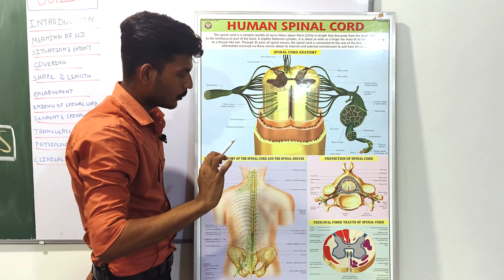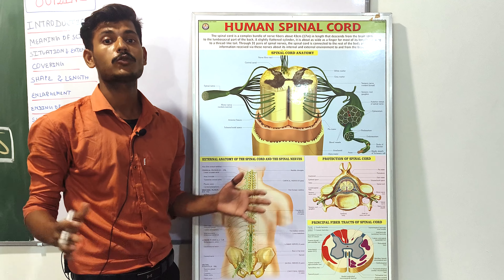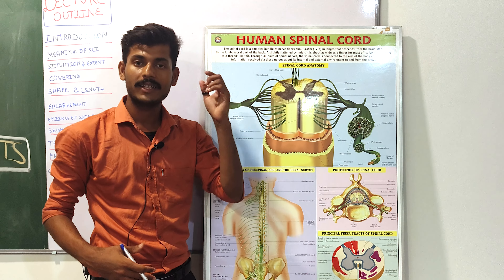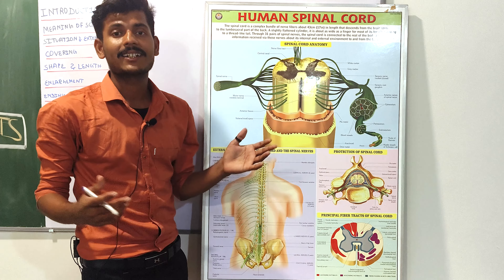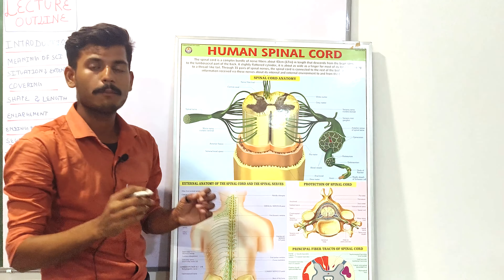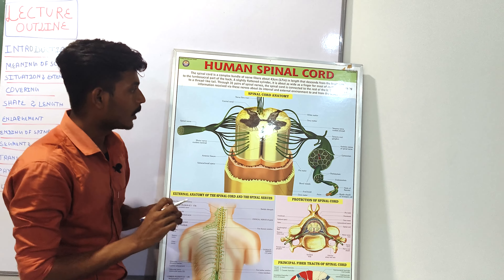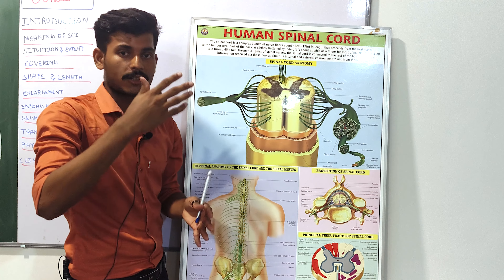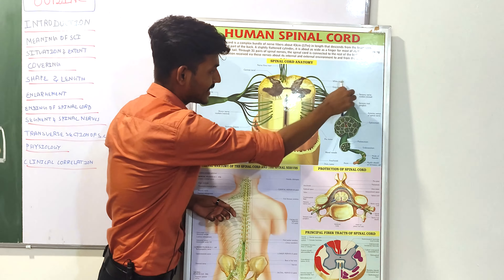The spinal cord acts like a messenger superhighway — whatever information goes to the higher system passes through the spinal cord. The white matter consists of myelinated neurons and the gray matter mostly consists of non-myelinated neurons. The function of the white matter is to form tracks — ascending tracks and descending tracks.